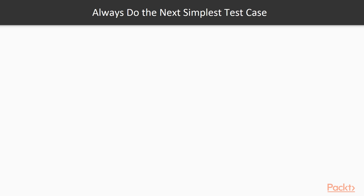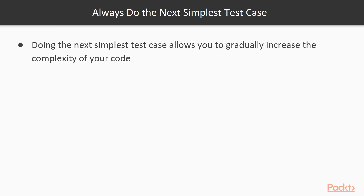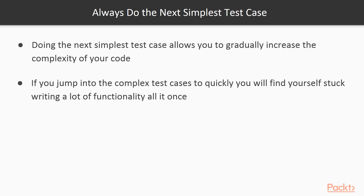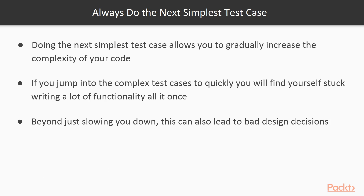First, you should always do the next simplest test case. This allows you to gradually increase the complexity of the code, refactoring as you go. This helps keep your code clean and understandable. If you jump to the complex cases too quickly, you can find yourself stuck writing a lot of code for one test case, which breaks the short feedback cycle we look for with TDD. Beyond just slowing you down, this can also lead to bad design as you can miss some simple implementations that come from the incremental approach.